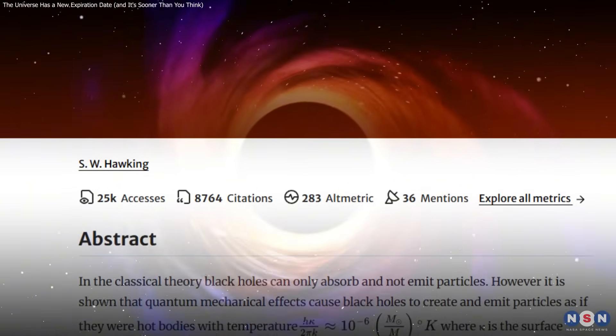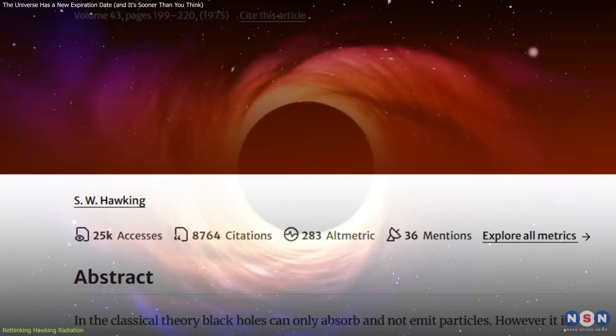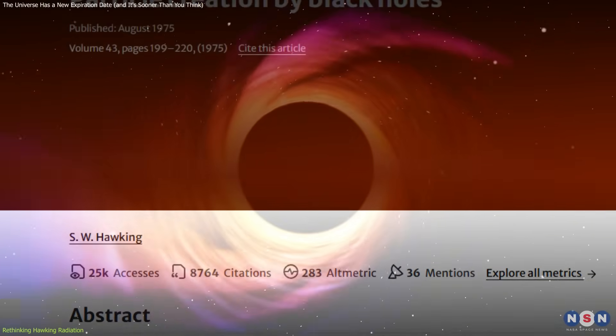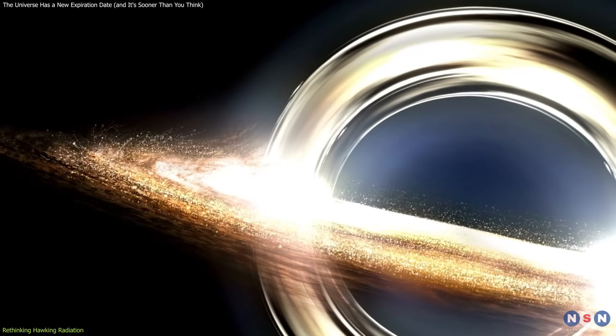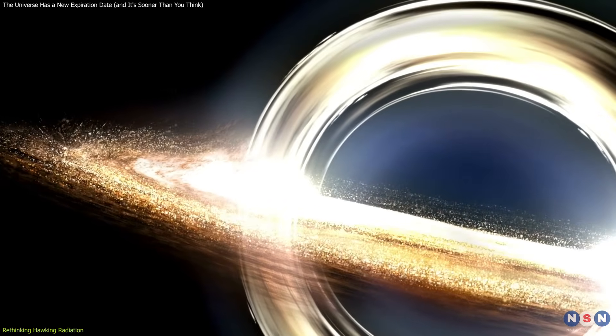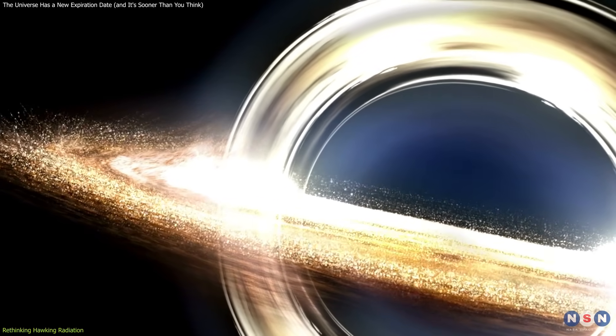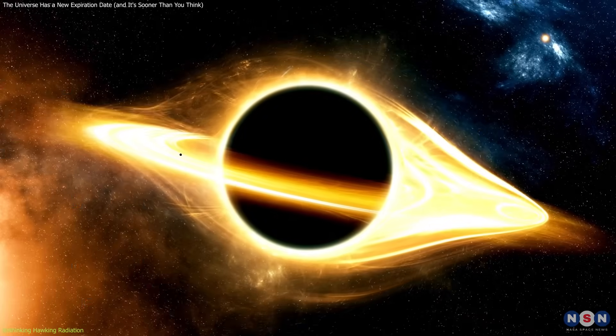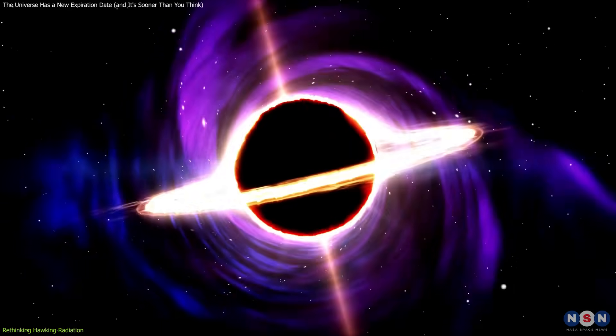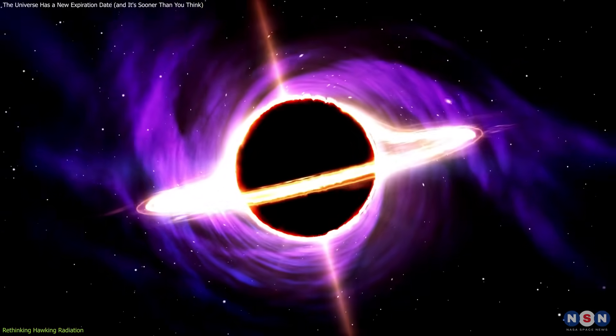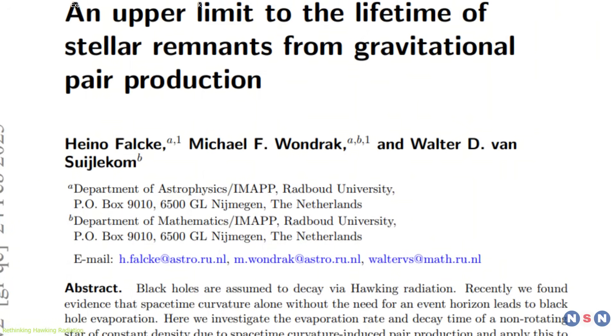In 1975, Stephen Hawking introduced a theory that turned black holes into more than just cosmic vacuum cleaners. According to Hawking, black holes emit faint radiation due to quantum fluctuations at their event horizons. This Hawking radiation meant that black holes weren't truly eternal. They could gradually evaporate over vast timescales.